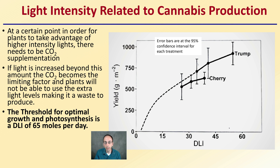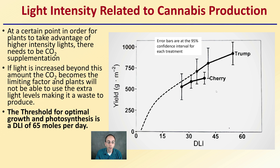We can see this leveling off in the data. Error bars are at the 95% confidence interval for each treatment. Looking at DLI versus yield across different cannabis strains, keep that threshold of optimum growth in mind at 65 moles per day when you calculate and compare your DLI.